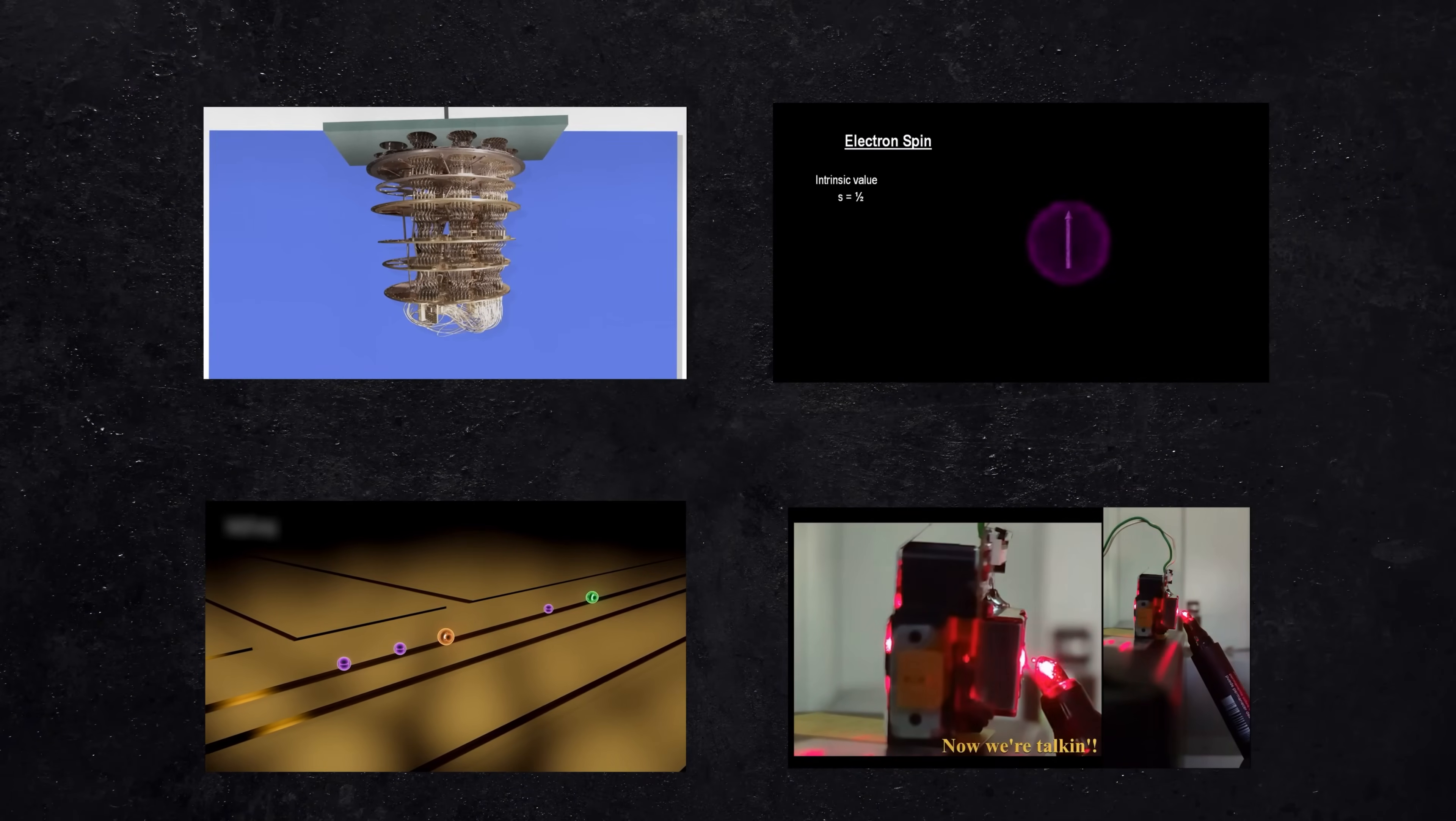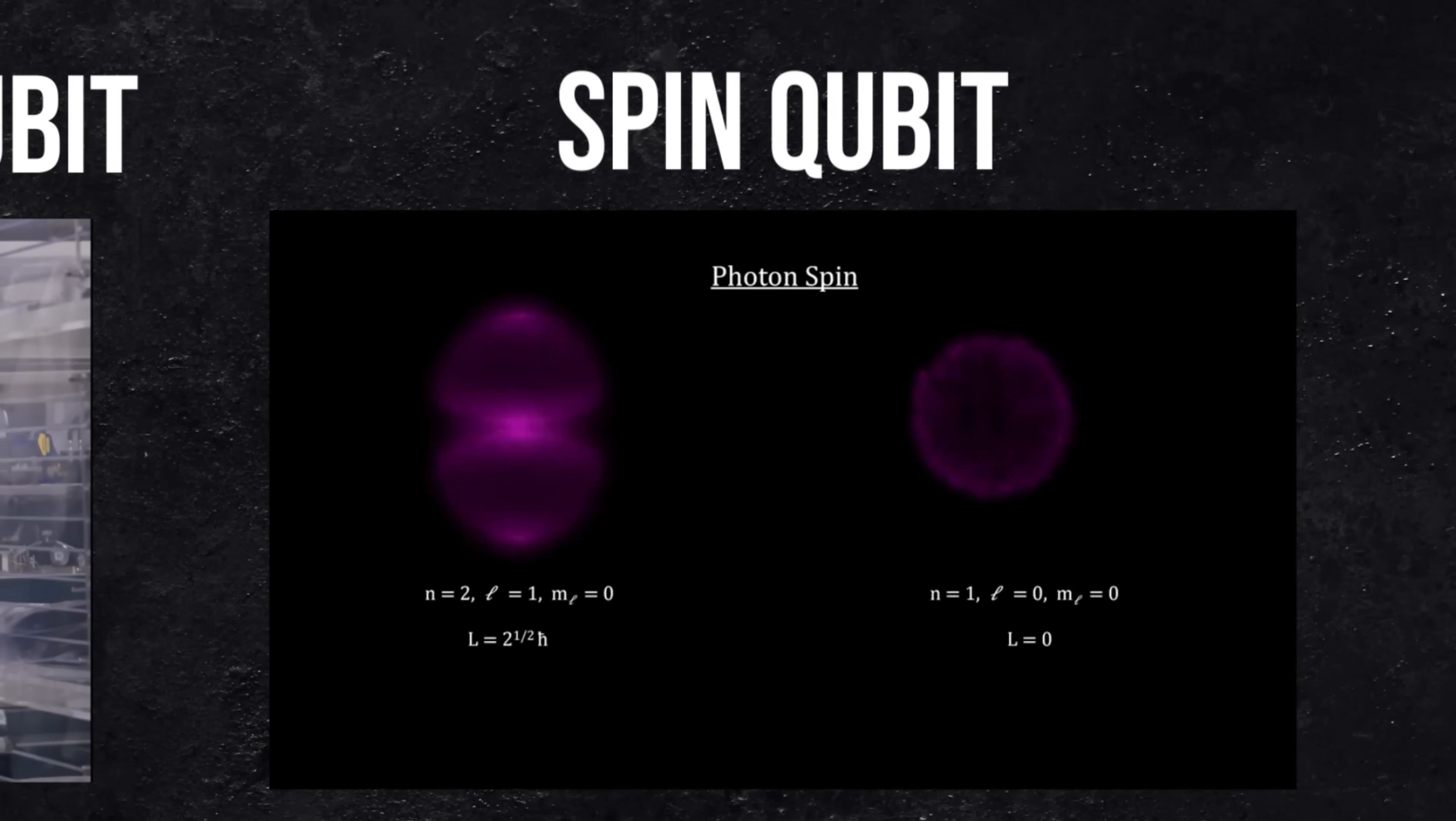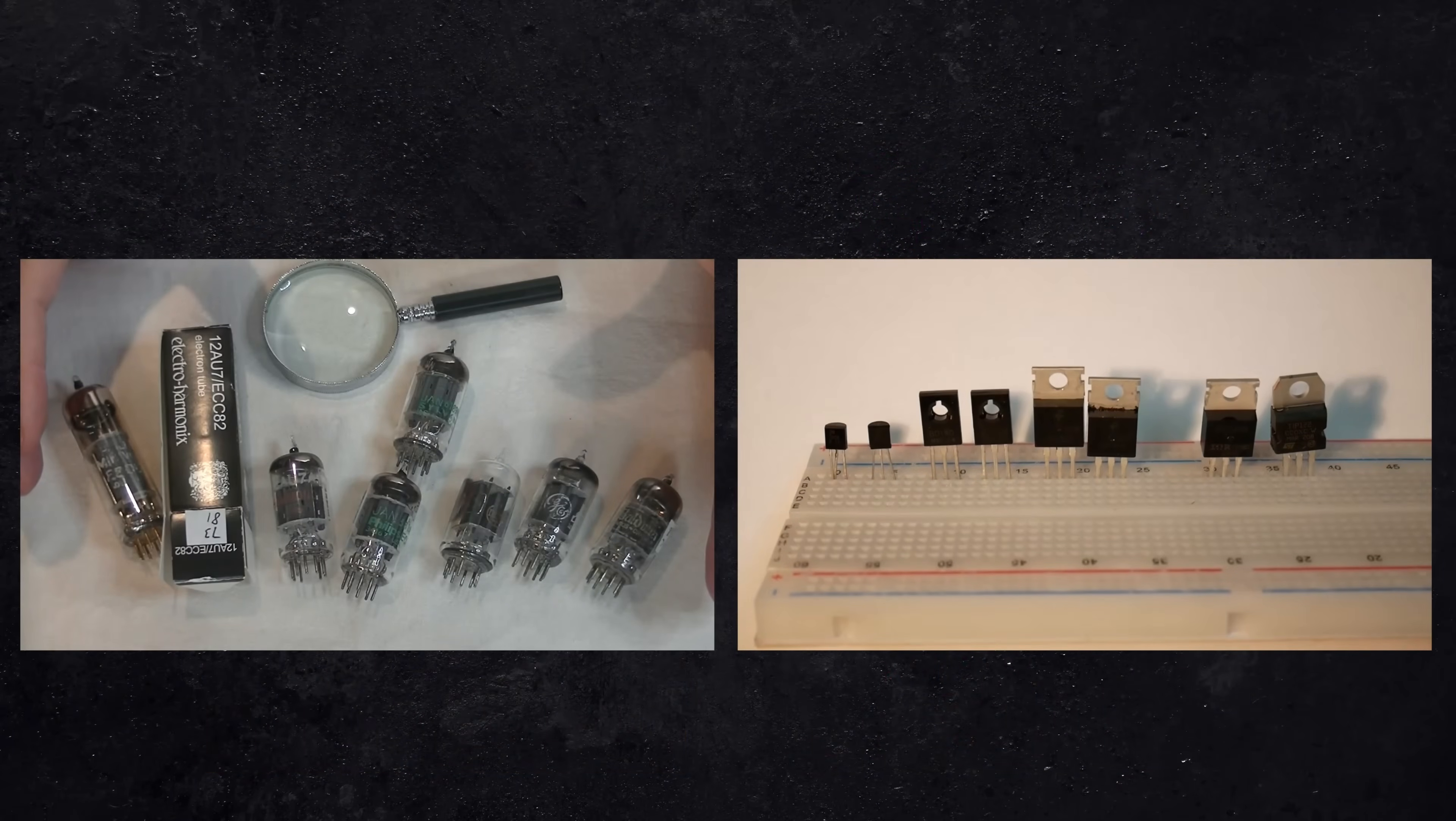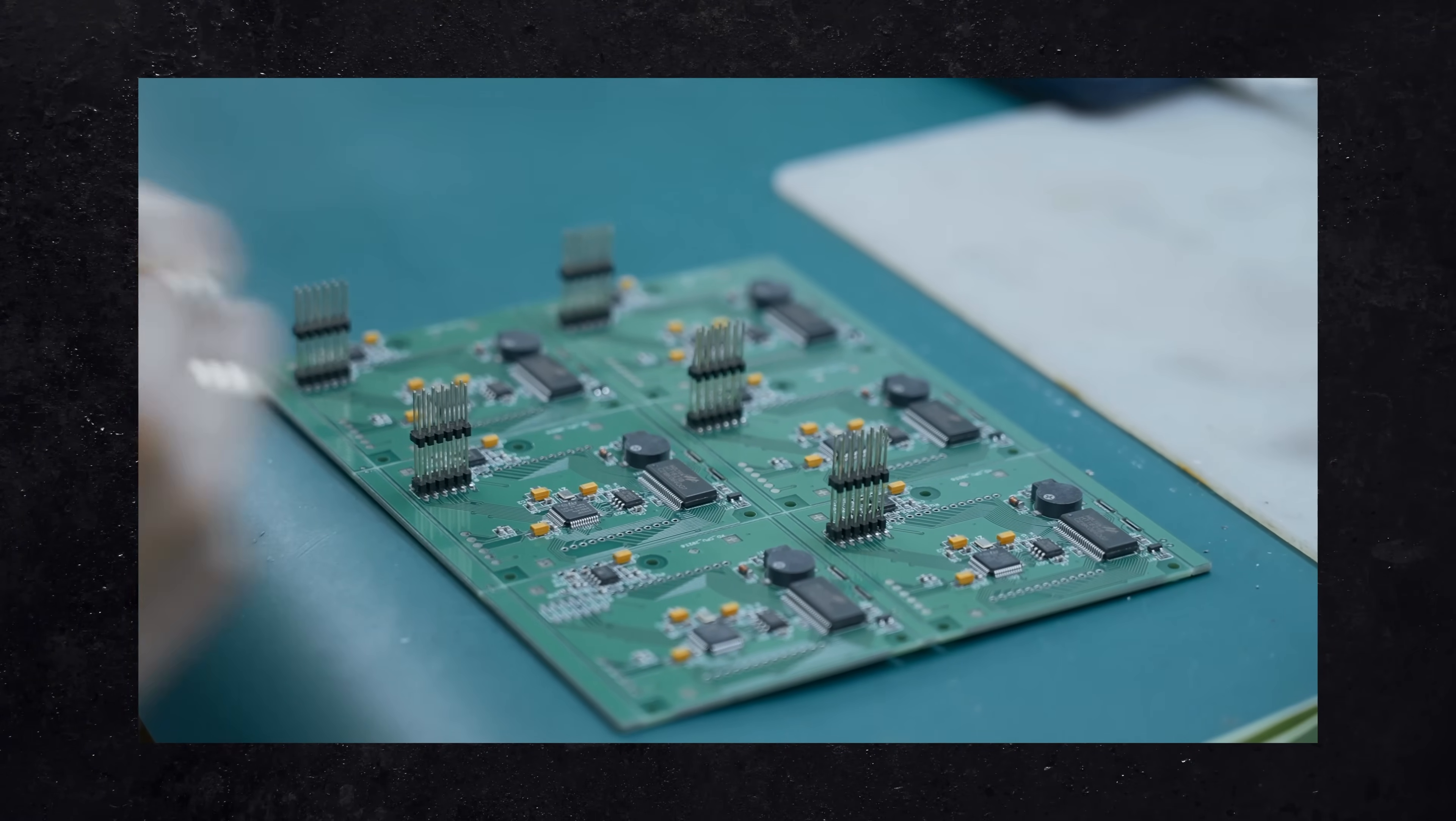There are plenty of different approaches to make a quantum computer. IBM and Google favor superconducting qubits, IonQ and Quantinuum use trapped ions, Intel uses spin qubits, and Pascal uses neutral atoms. But these are not the only possible ways. Think of it like vacuum tubes and transistors - both make classical computers, but transistors are way better. Quantum computers, however, don't yet have a clear winner.